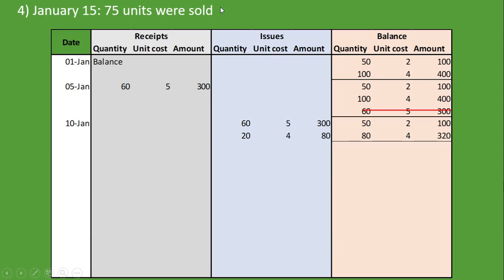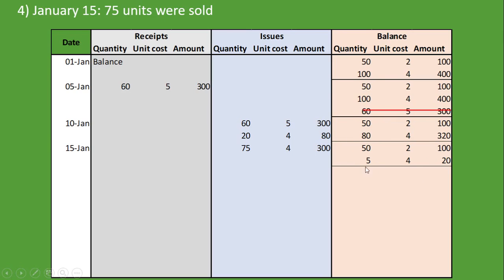The fourth transaction: on January 15th we sold 75 units. We enter the date and look at what we last received — we have 80 units at 4RN per unit. Since we need 75 units and we have 80 available, we take all 75 from that batch: 75 units at 4RN per unit equals 300RN. Under balances, we still have the 50 units at 2RN per unit, and from the 80 units we subtract 75, leaving 5 units at 4RN per unit equalling 20RN.